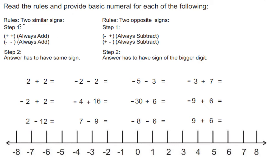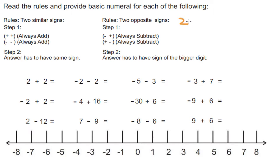Rule number one: two similar signs. Two numbers with similar signs always add — two positive numbers always add, two negative numbers always add. Step number two: the answer has to have the same sign, whatever the sign initially was. So we know that two plus two, two positive numbers, we have to add them. Two plus two is equal to four.